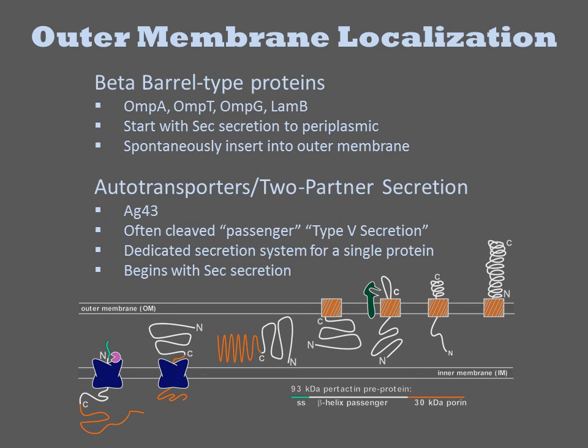The most studied example of autotransporters is the AG43 protein. In autotransporters, one domain of the protein is a beta-barrel that spontaneously inserts into the outer membrane, and then the passenger domain is pulled through the pore and displayed on the surface. Often, the passenger domain will be proteolytically cleaved, resulting in secretion. Two-partner systems do a similar thing, but the passenger and displayer domains are separated into two polypeptides.